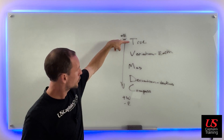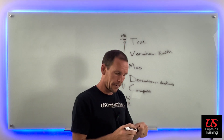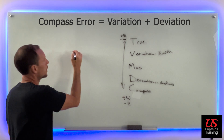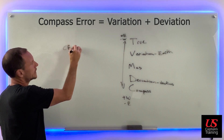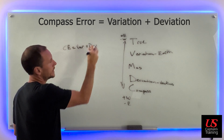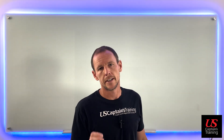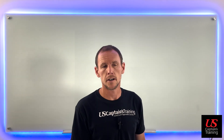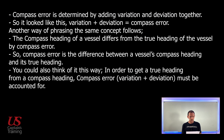The total error between true and compass is compass error. Compass error is equal to variation plus deviation. Compass error is determined by adding variation and deviation together: variation plus deviation equals compass error. Another way of phrasing this: the compass heading of a vessel differs from the true heading of the vessel by compass error. Compass error is the difference between a vessel's compass heading and its true heading.